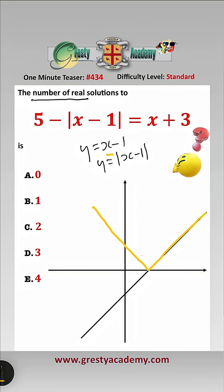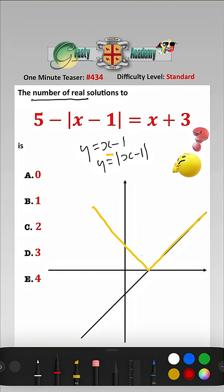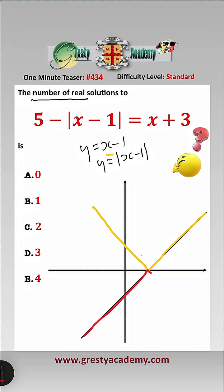So y equals minus mod x minus 1. Let's change the colour again. We'll basically now be the red. So that's y equals minus mod x minus 1.